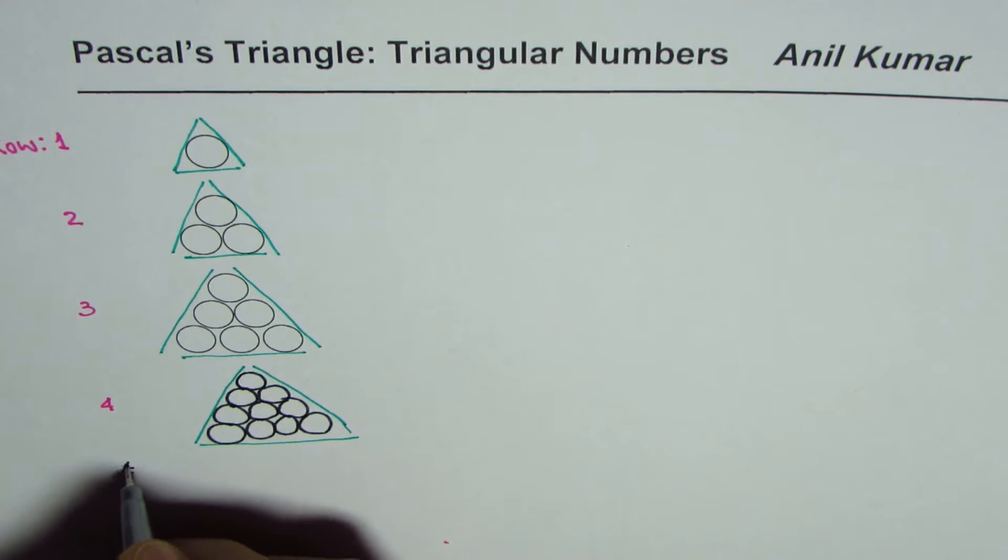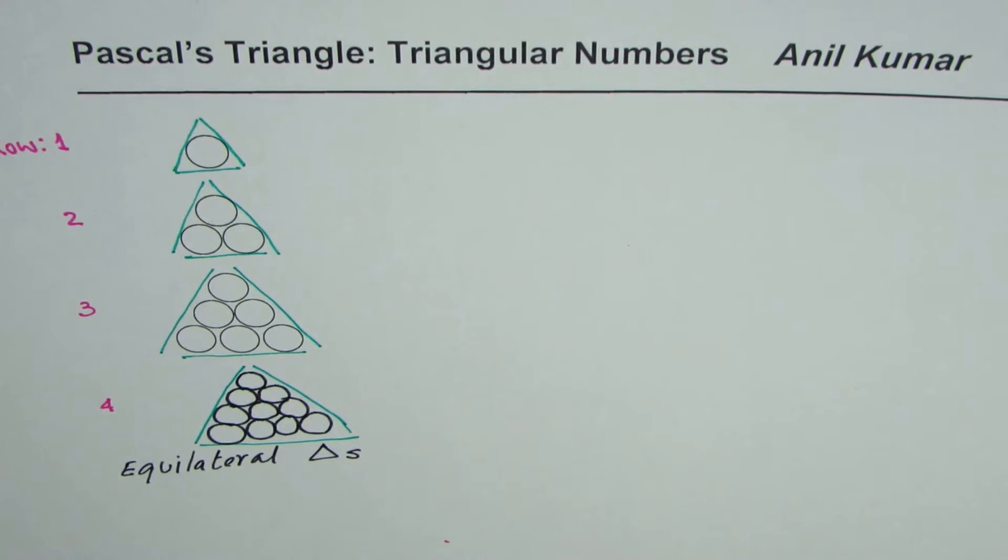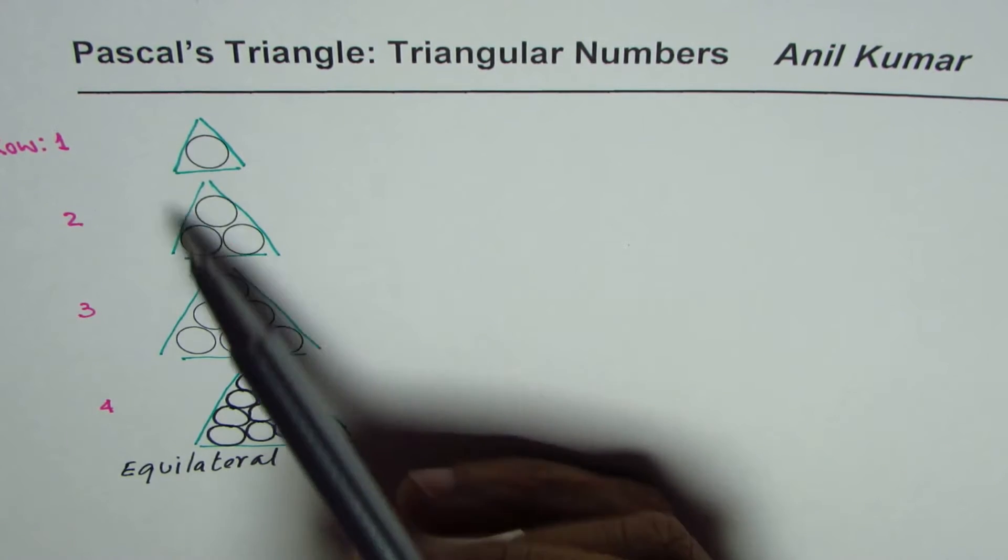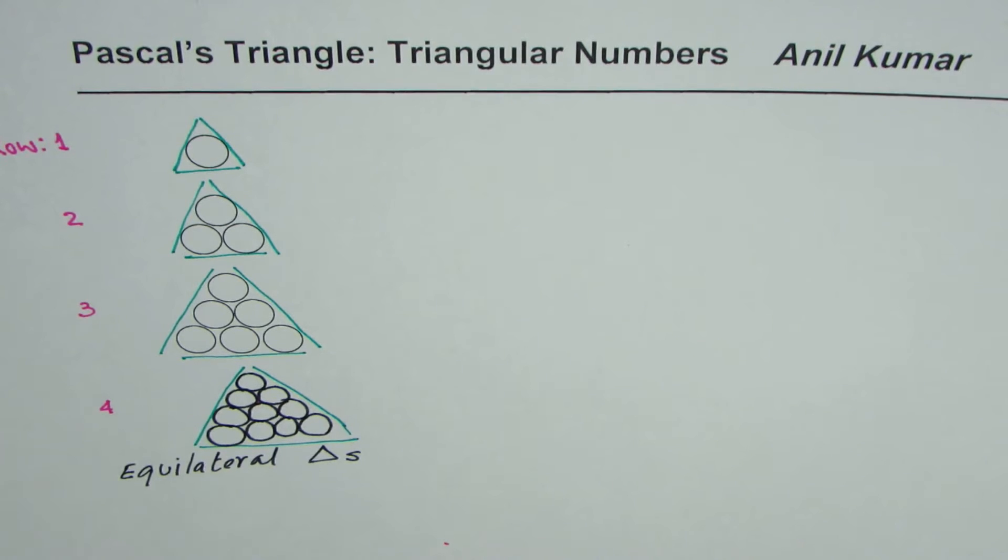All these triangles are equilateral triangles. So what we get here is equilateral triangles. And we need to figure out in these triangles how is the pattern of circles increases. That is what we need to find.